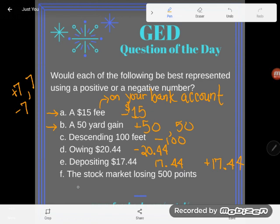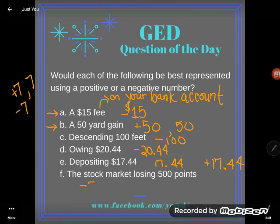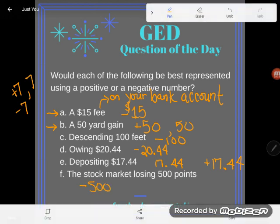And if the stock market loses 500 points, the stock market is losing 500 points — I would call that a negative 500, or going down 500. Great. If you have any questions about this or any other GED math topic, be sure to drop it in the comments and I'll do my best to answer it.